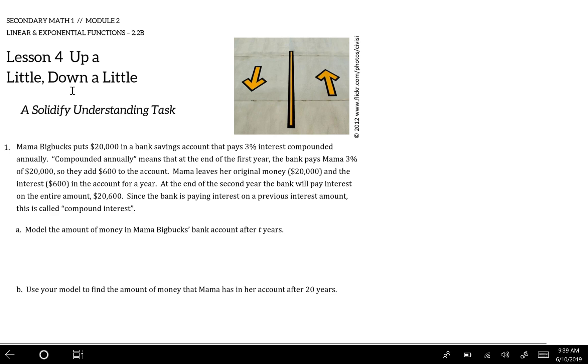So they add six hundred to the account. We have twenty thousand multiplied times 0.03, which is three percent as a decimal, and that's six hundred. So they're adding that to the twenty thousand to get twenty six hundred.